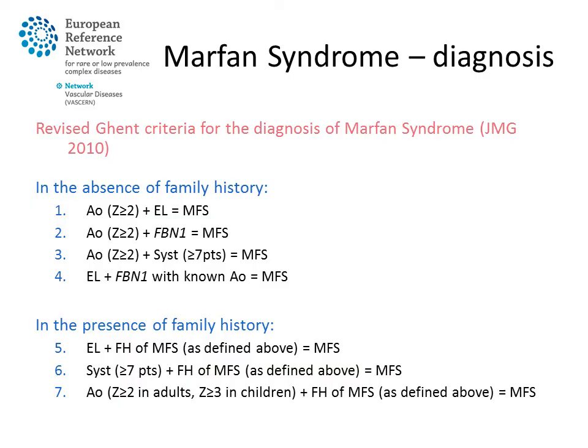In the presence of a family history, the rules are slightly different and slightly milder, where ectopia lentis and a family history of Marfan syndrome, or a systemic score above 7 points and a family history of Marfan syndrome, or aortic root dilatation and a family history of Marfan syndrome are enough to establish the diagnosis.